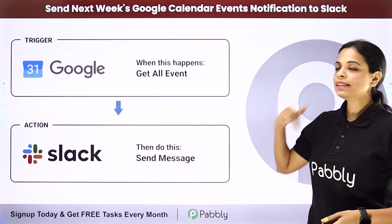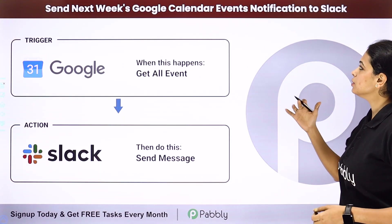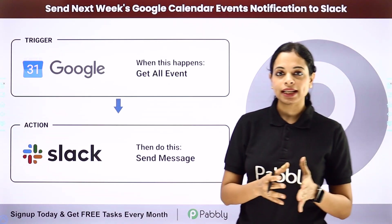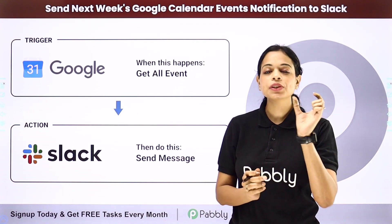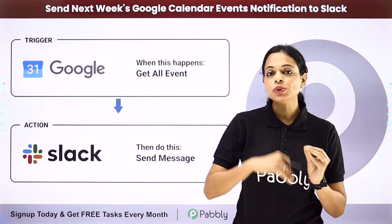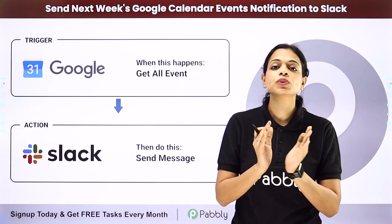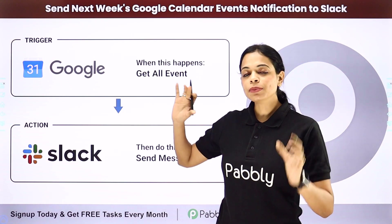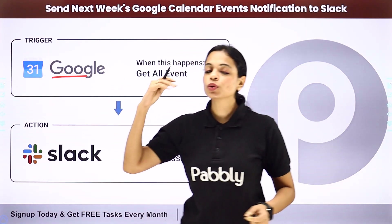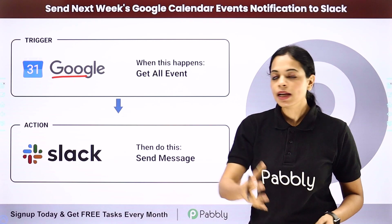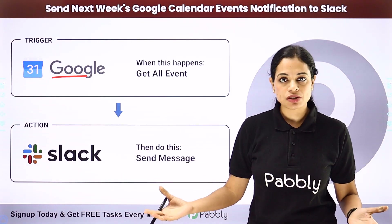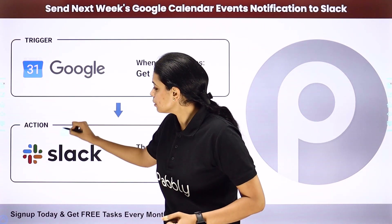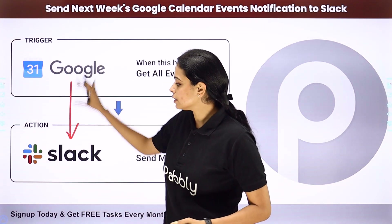In this video, we are going to see how to send next week's Google Calendar events notifications to Slack. Let's say I've got a couple of events in my Google Calendar, and on one particular day of the week, I should be able to send notifications for all the events which are scheduled for the next week. I'll have to set up some integration between Google Calendar and Slack, which is a social messaging app. You can send it to Discord or any other medium.